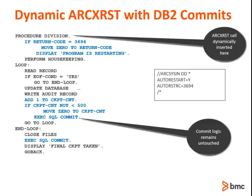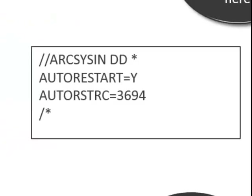In most cases, the dynamic call options of auto restart and auto checkpoint are inserted via keywords in the ARC sysindd as shown in the example on the right. In this example, the auto restart keyword will insert the dynamic ARC restart call. The auto restart return code keyword has instructed ARC to insert a value of 3694 into the COBOL reserved word return code. The program should immediately test return code for the designated keyword to determine if the program is being restarted. Here, the program is only issuing a message to indicate a restart is being processed.